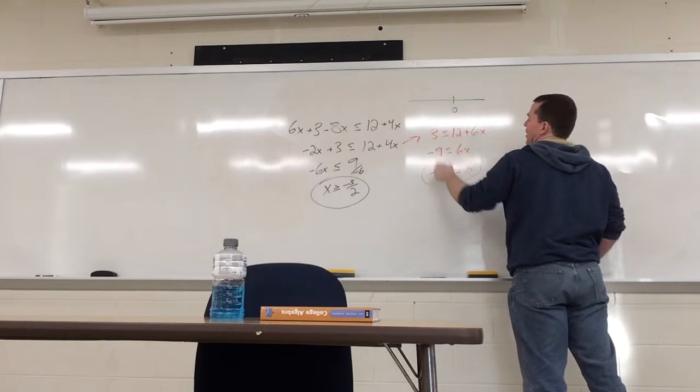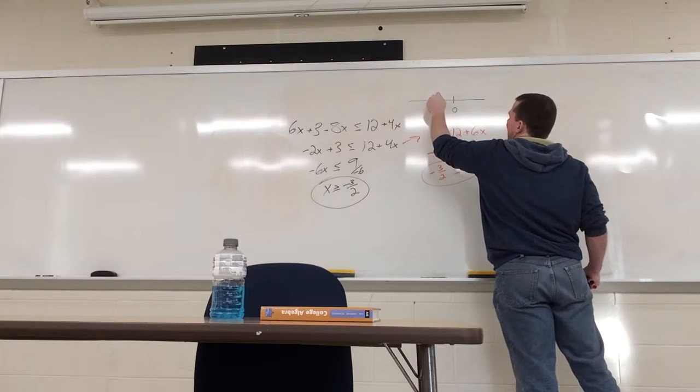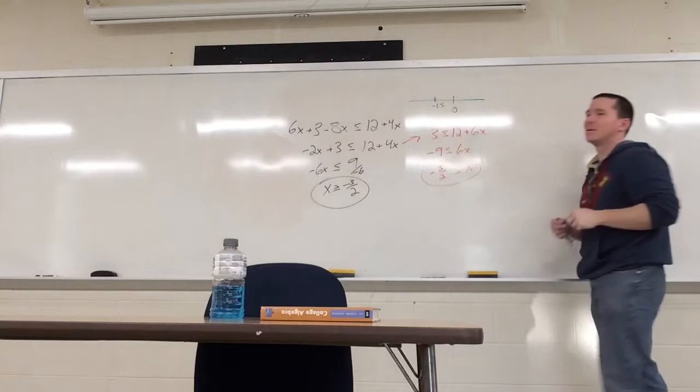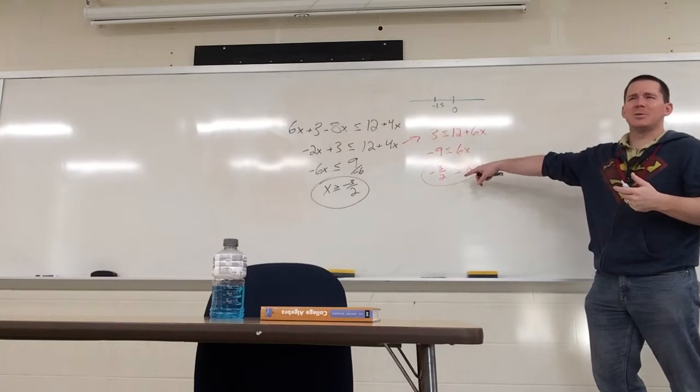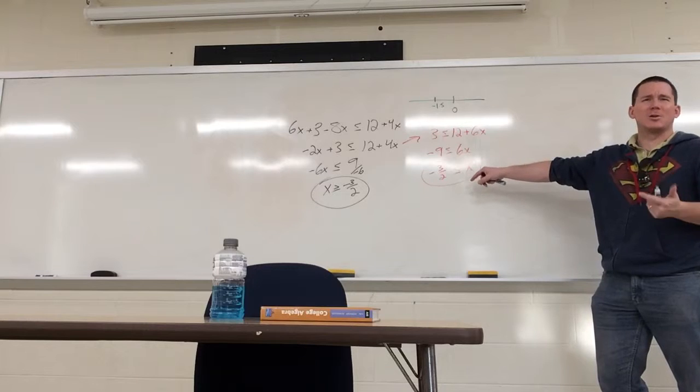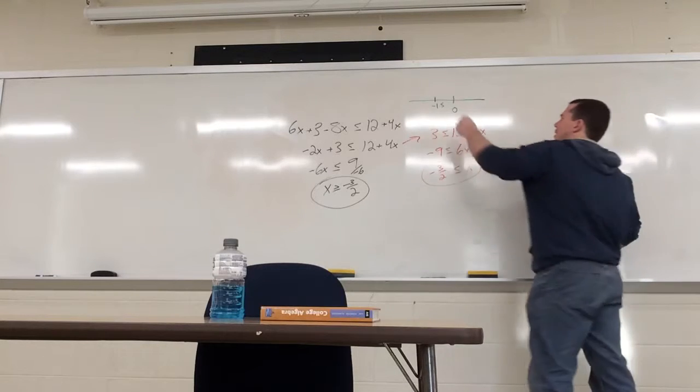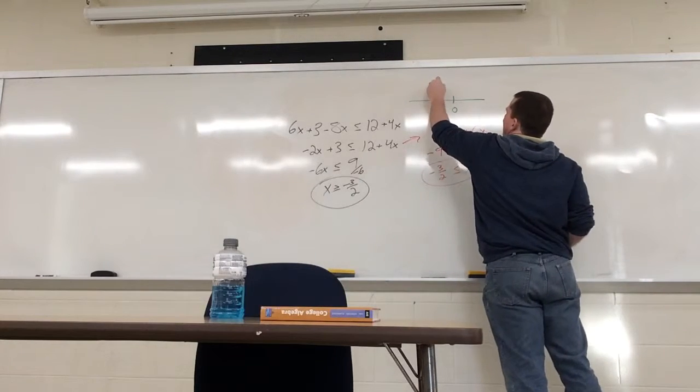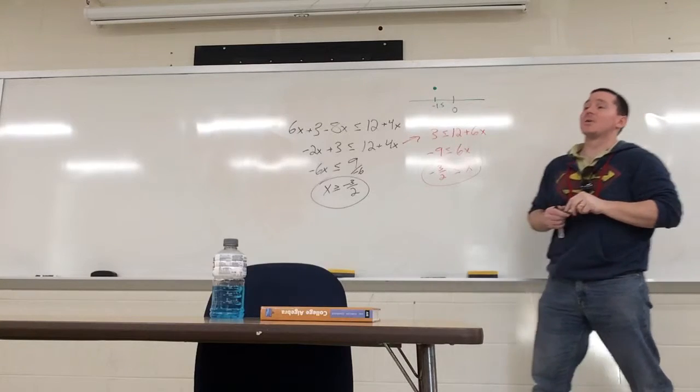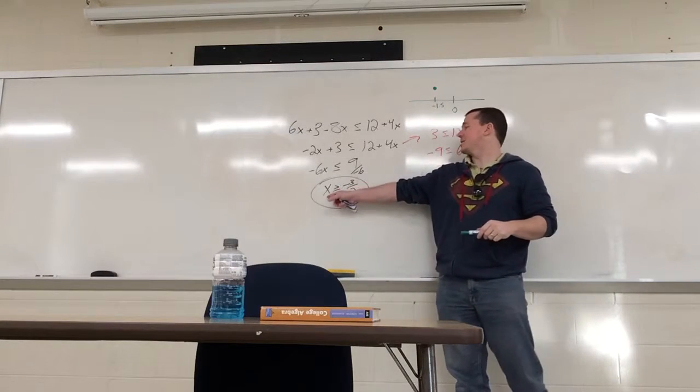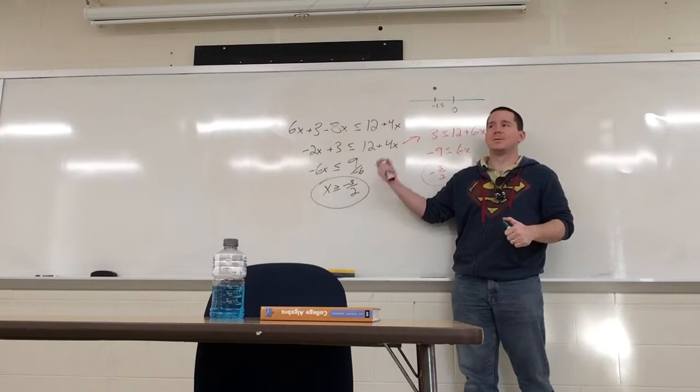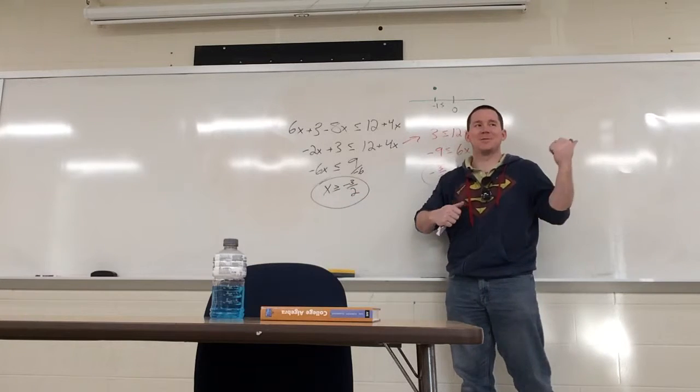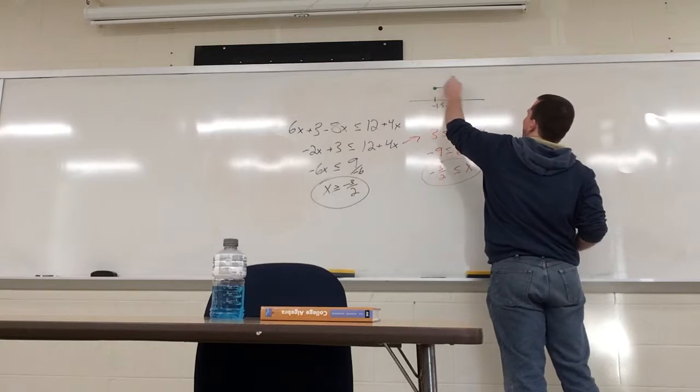There's zero. Negative 3 halves is somewhere over here. Negative 1.5. We draw a closed circle, because less than or equal to or greater than or equal to means you draw a closed circle on a number line, right? So I draw a closed circle. Which way does my arrow go? Towards zero. X is greater than or equal to negative 3 halves. Which way is greater than or equal to? Right. That way. My left, your right. Which means the arrow goes this way.